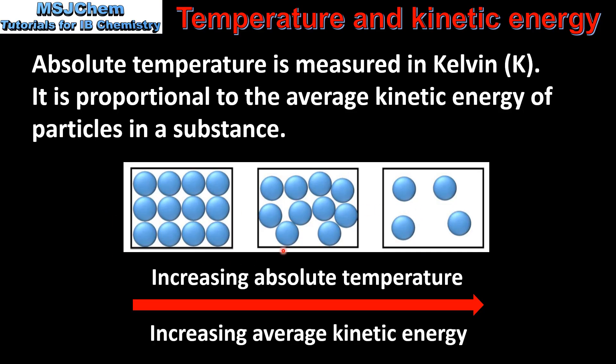As we change from a solid to a liquid to a gas by increasing the absolute temperature, we also have an increase in the average kinetic energy of the particles. So the particles in a solid have lower average kinetic energy than the particles in a gas which have higher average kinetic energy.